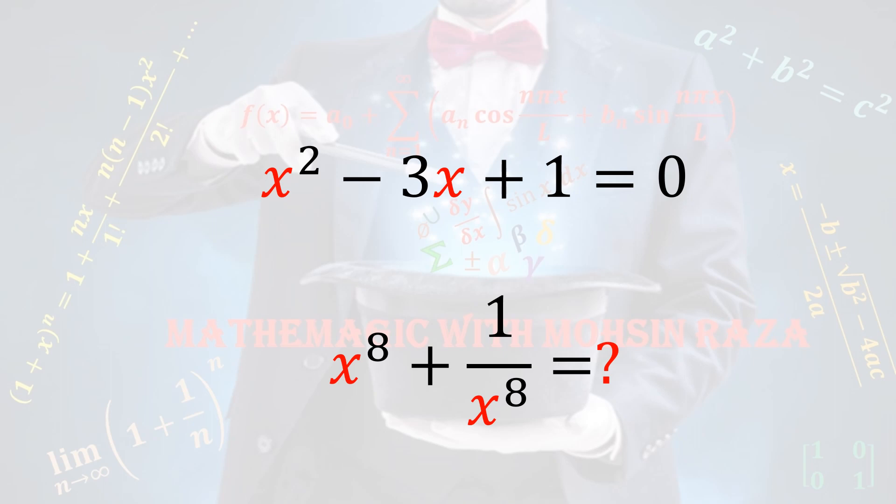If we have x² - 3x + 1 = 0, then what would be the value of x⁸ + 1/x⁸? And what is the trick to find this value?